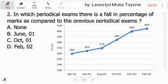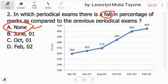Question number 2: In which periodical exams there is a fall in percentage of marks as compared to the previous periodical exams? You can see, there's no fall. 360 became 365, became 370, became 385, became 400, became 405. So we don't need to compute this. The answer is just none. Let me repeat. The question here is, where did it fall, where the percentage of marks dropped compared to the previous periodical exam. For example here, where did it fall? None, it didn't fall because it increased. So none.